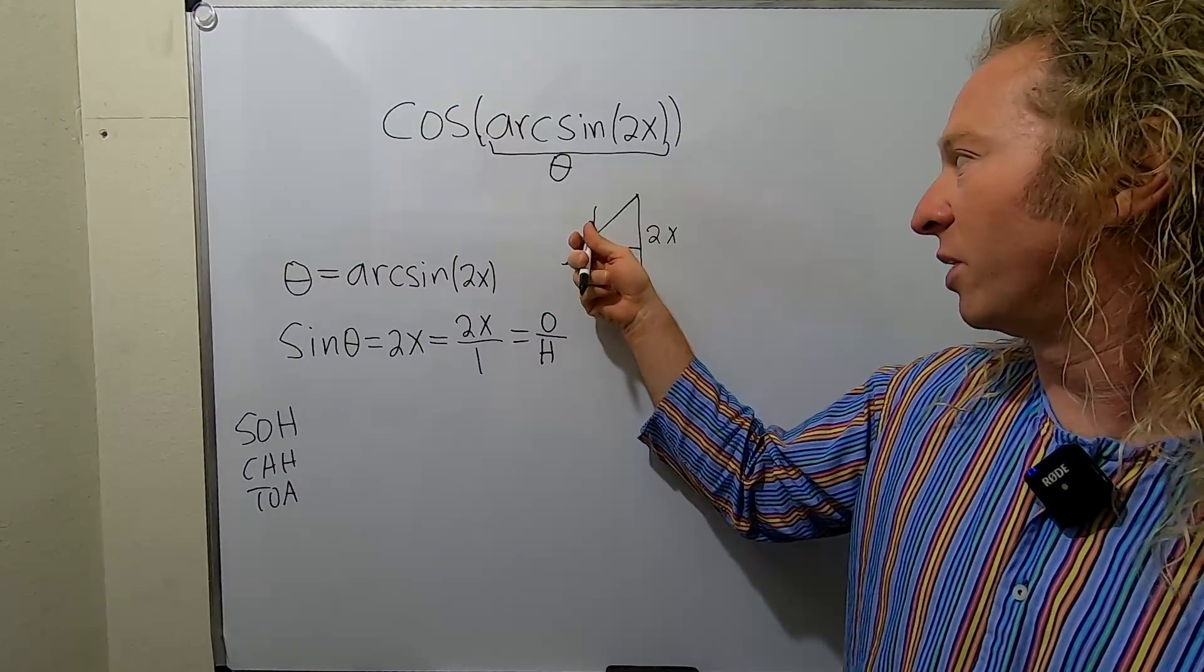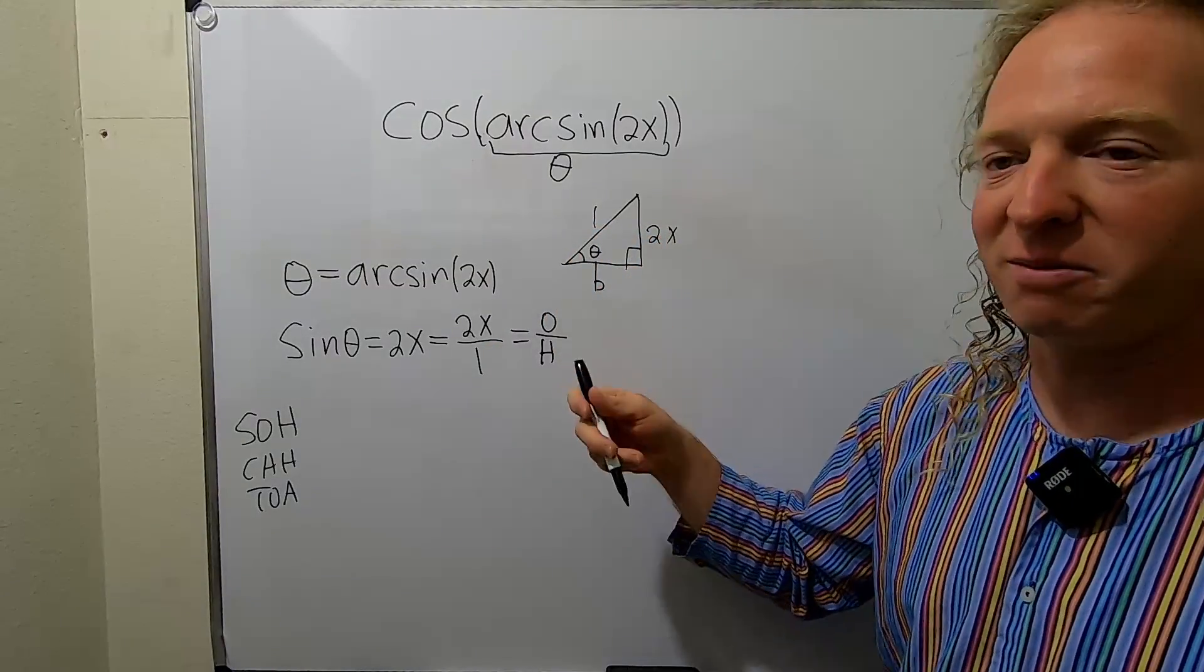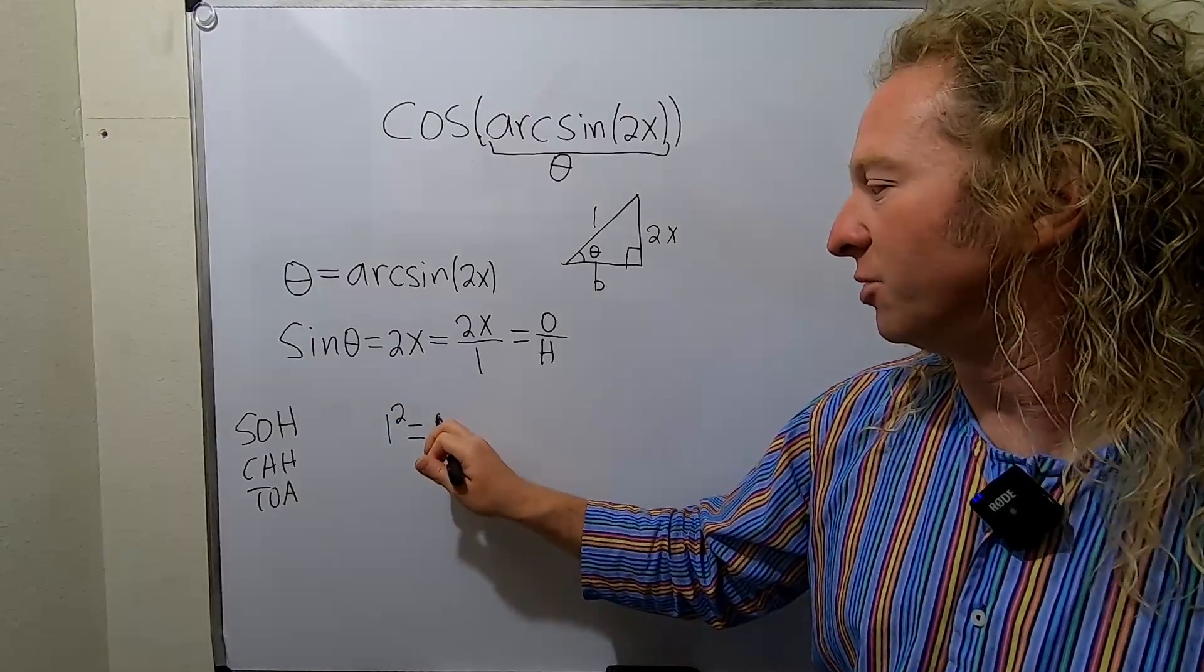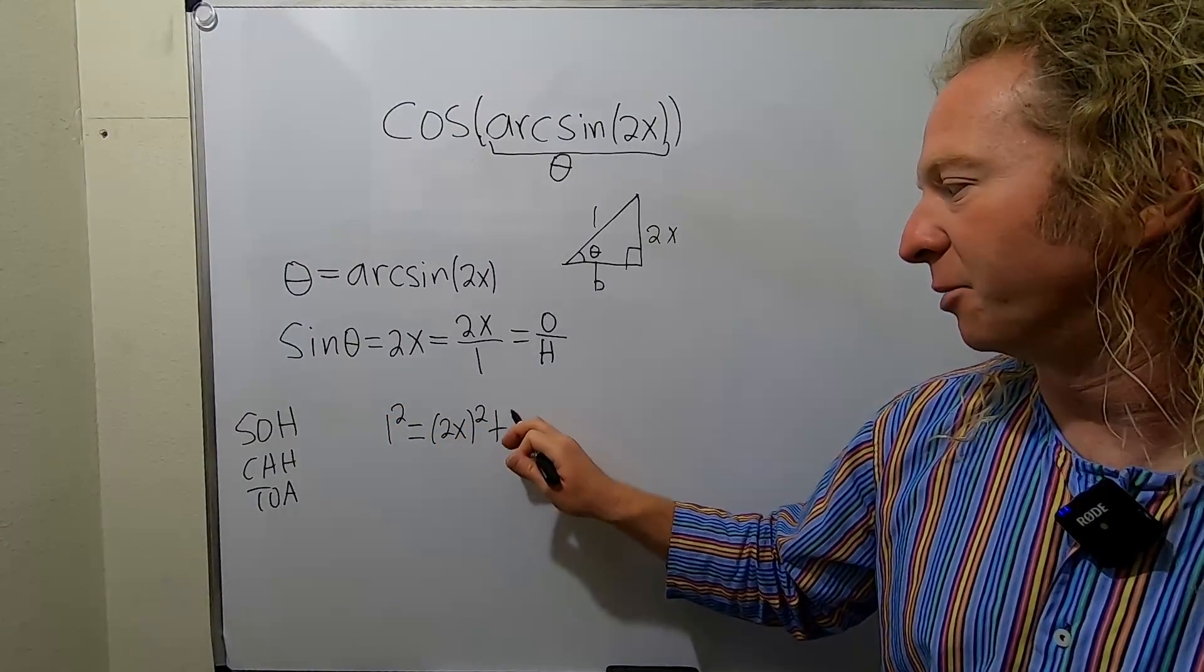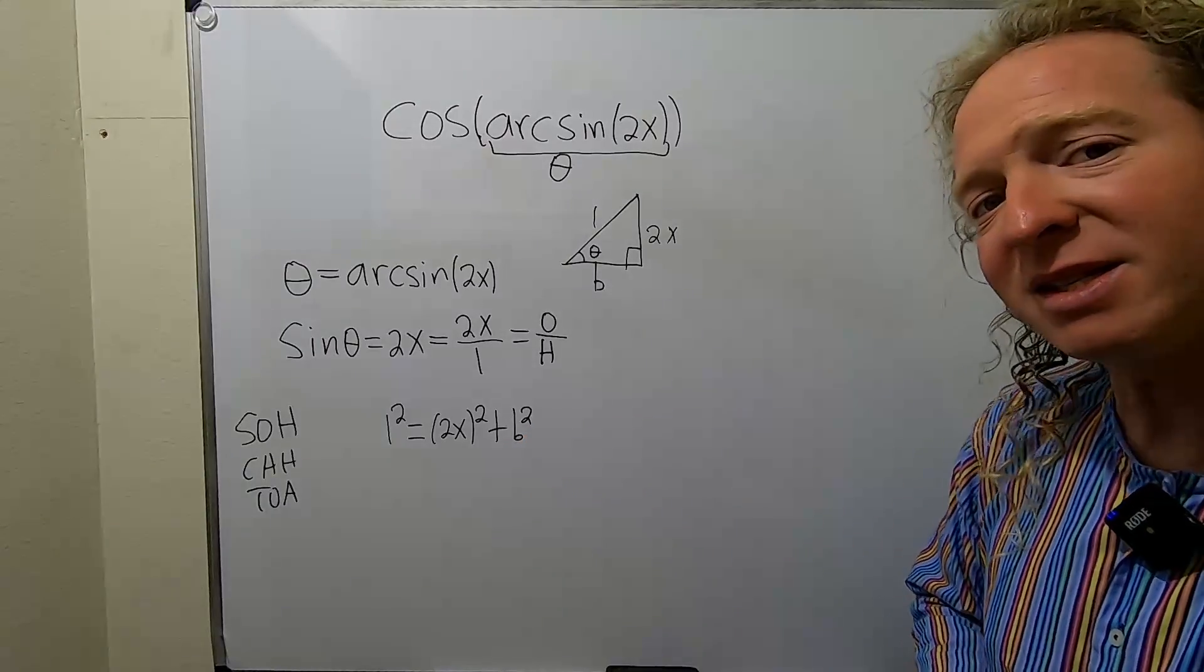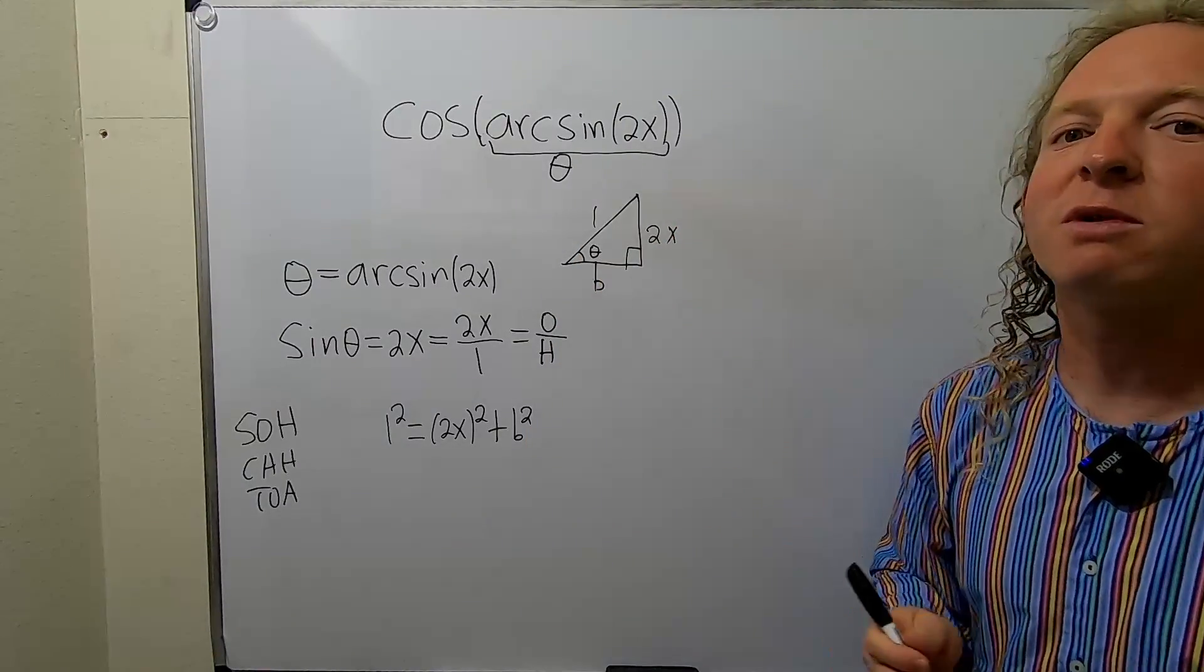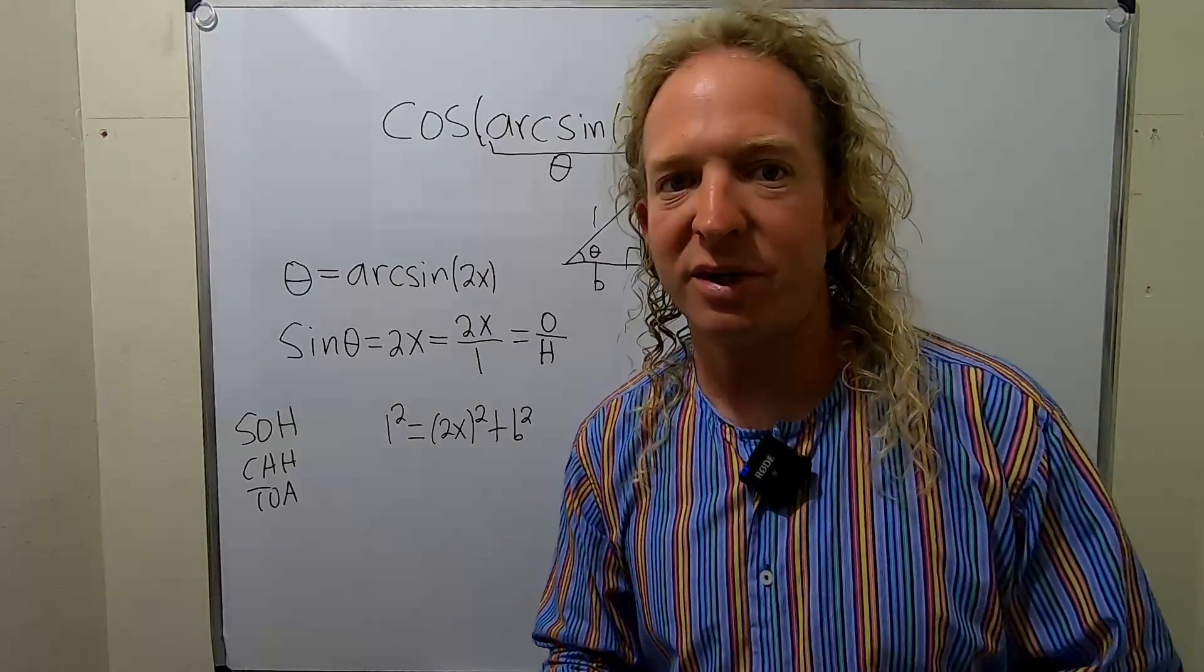In other words, the hypotenuse squared is equal to these guys squared and being added. So we have that 1 squared is equal to 2x squared plus little b squared. That's the Pythagorean theorem, right? So the square of the hypotenuse is equal to the sum of the squares of the other side.